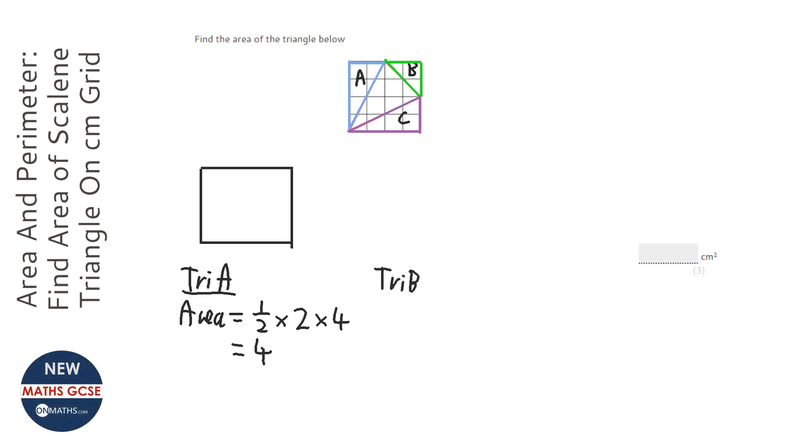So triangle B, the area is, so it's half times the base, which is two, because it's two across, and the height, which is two, because it's two squares up. That's going to be two.